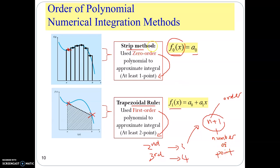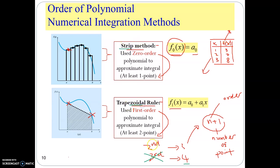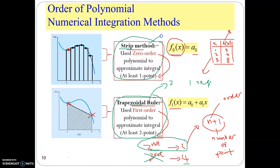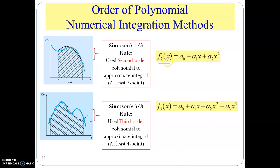Understanding the number of points required by each numerical method is important. For example, if you only have three sets of discrete data, we cannot use the third order integration method since it needs at least four points. To solve this problem, we can use the strip method, trapezoidal method, and the second order method. For the second order integration method, you need one segment. For the trapezoidal rule, two segments. For the strip method, three segments. The second order method is called Simpson's one-third rule, and the third order method is called Simpson's three-eighths rule.